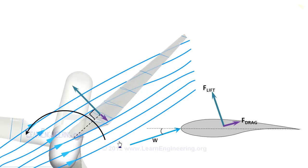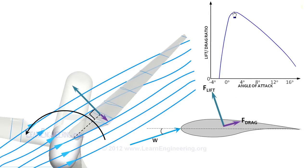So a wind turbine can give maximum performance when lift to drag ratio is maximum. This is called as optimum angle of attack.